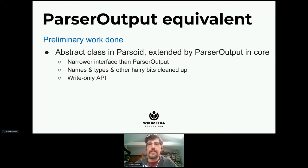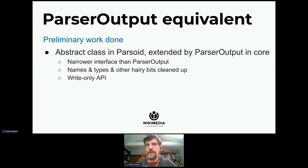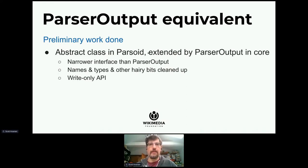The big difference here is that generally the new parser output class is a write-only API. As you record metadata about the page in your extension or in the core parser, you set it in the parser output, but there are no methods to get that and query it. The goal here is that the parts of the page should be parsed independently. For the main parse, you're recording stuff as you go — you're not depending on what's been put into the parser output by other pieces of the page.